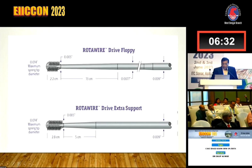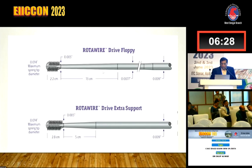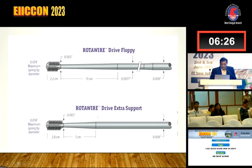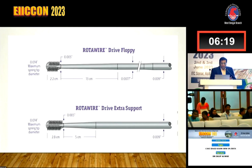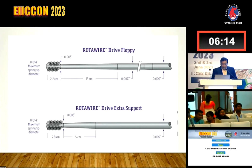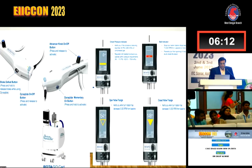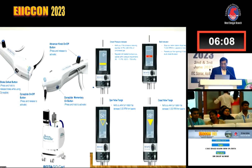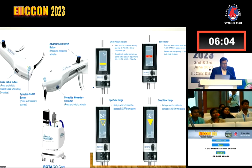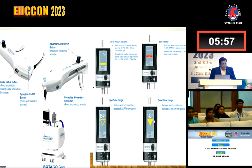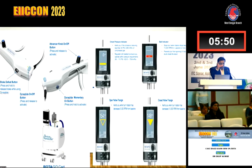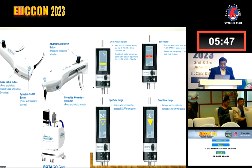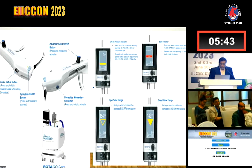The rota drive extra support wire has a uniform 0.009 thickness to 5cm, then tapers directly to 0.005 - there is no transition through 0.0077. In rota pro, the yellow triangle indicator tells you that 5,000 rotations have elapsed, and a solid triangle indicates 10,000 rotations have elapsed. This is a visually attractive system right in front of you, and it's a really good experience to use rota pro.